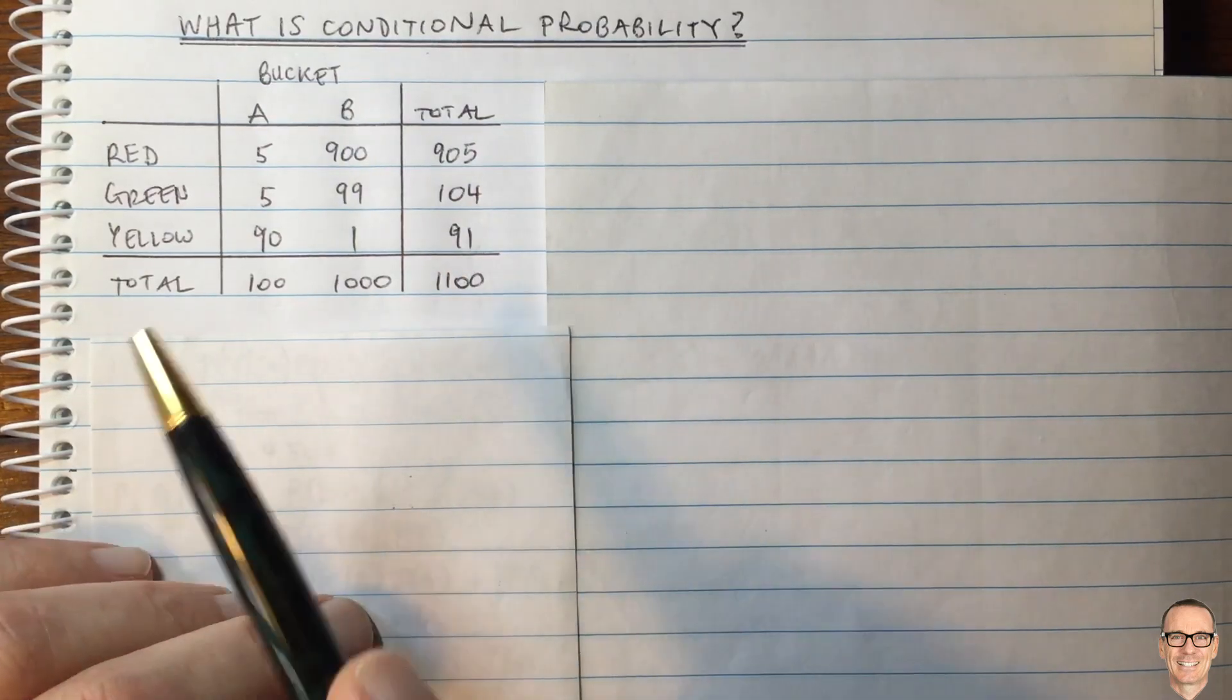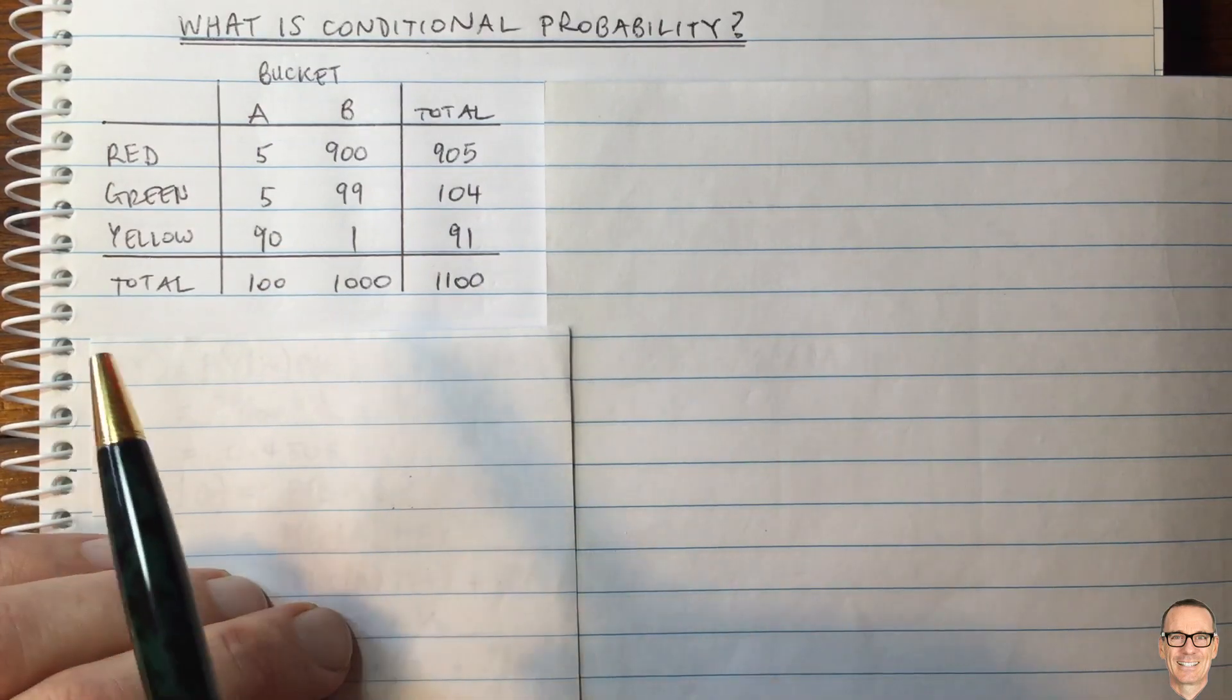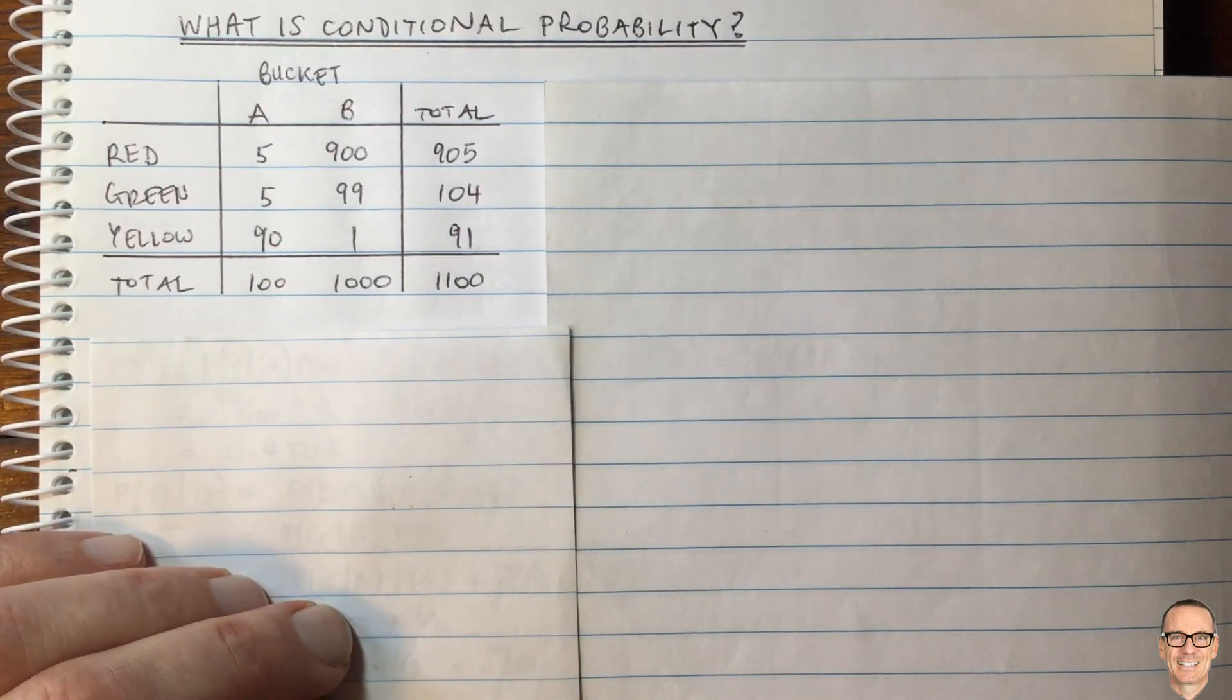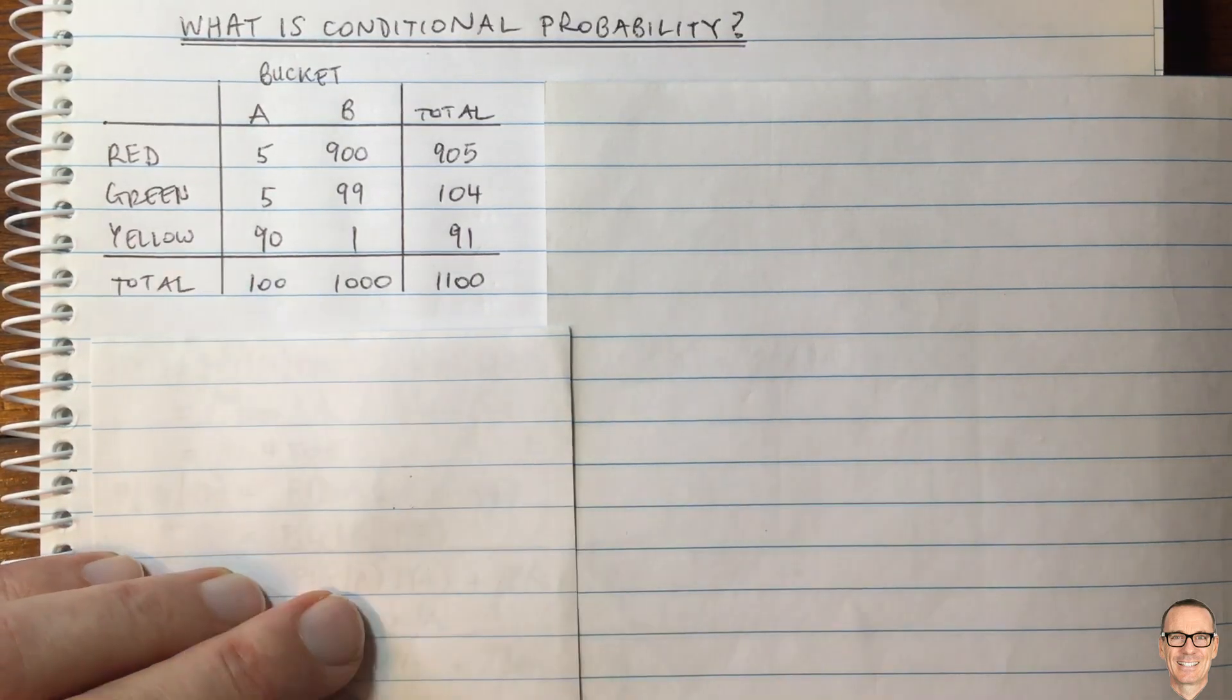We might ask ourselves, if we were to choose a bucket at random, let's say with 50% chance, and then pick a ball out of that bucket, what's the probability that we get a yellow ball?